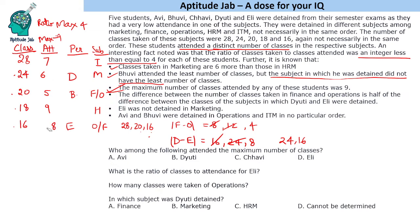We have now filled in Duthi and Ali. The remaining students are Avi and Bhuvi. Avi and Bhuvi were detained in operations and ITM in no particular order. Since Bhuvi attended 5 classes and is detained in operations (20 classes), Bhuvi is in operations. Therefore Avi must be detained in ITM (28 classes), and the remaining student Chavi is in finance (20 — wait, Chavi is in finance with 20... actually Chavi takes the remaining finance slot).